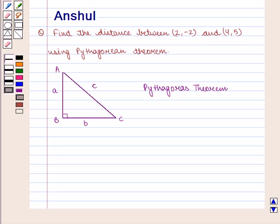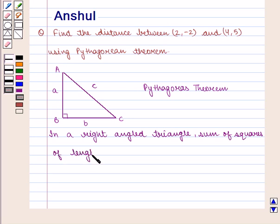We know that Pythagorean theorem states in a right-angled triangle, sum of squares of length of legs is equal to square of length of hypotenuse.